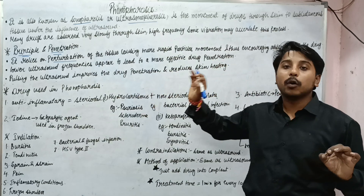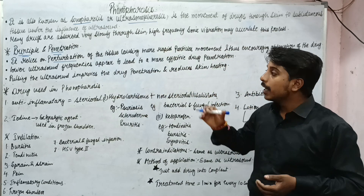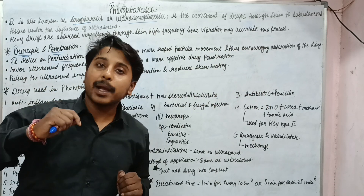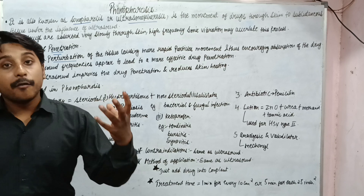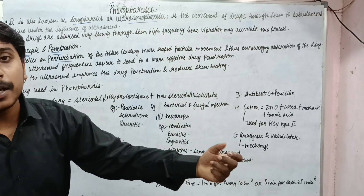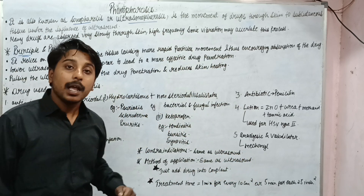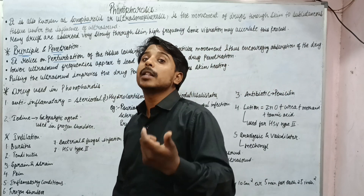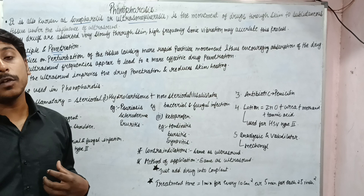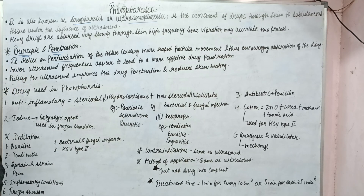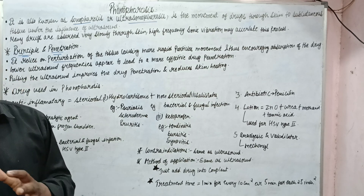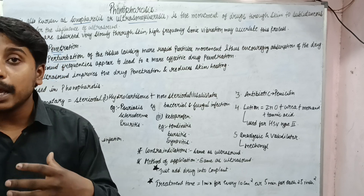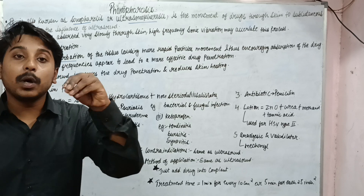It relies on the perturbation of the tissue. Then two important points: either you will use 1 MHz or 3 MHz. As we know, 1 MHz has deeper penetration, so we will use 1 MHz. Then, will you use pulse mode or continuous mode? We will use pulse mode. Why? Because if we are using continuous mode, there will be a thermal effect, and it may increase the blood flow, which would not allow the entry of the drug into the local area.